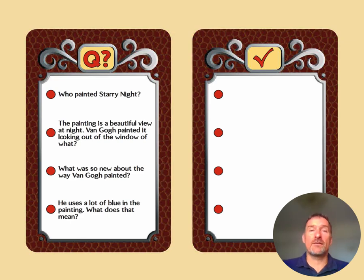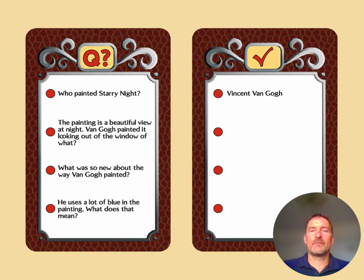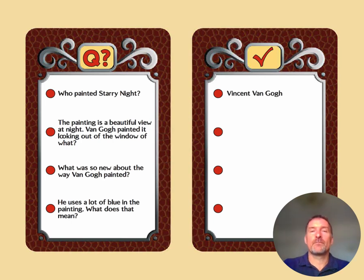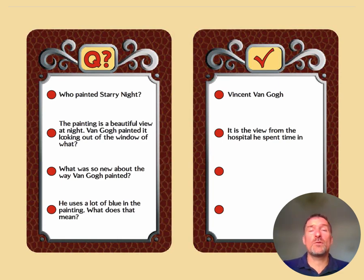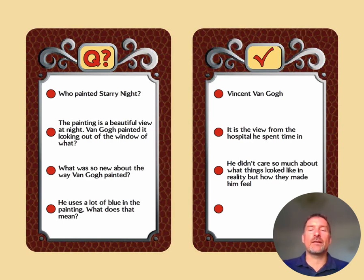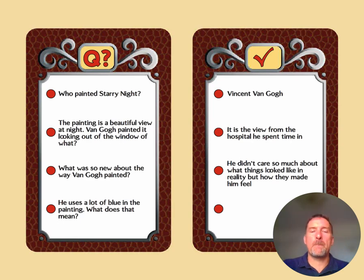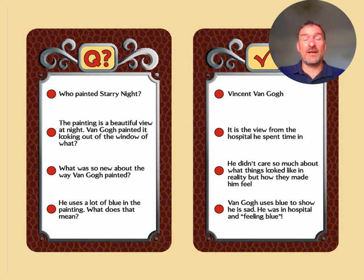Here are some questions about the painting Starry Night. Who painted it? Vincent van Gogh. The painting is a beautiful view at night — van Gogh painted it looking out of the window of the hospital he was staying in at the time. What was so new about the way van Gogh painted? He didn't care so much about what things looked like in reality, but how they made him feel, and he represented that with colours and brush strokes. He uses a lot of blue in this painting — why? Van Gogh uses blue because he was feeling blue; he was feeling sad because he was in hospital — that's why we often say 'feeling blue.'